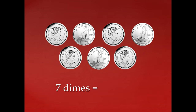So if we have seven dimes, let's count and see how many cents that would be: ten, twenty, thirty, forty, fifty, sixty, seventy. Did you notice that when we counted the dimes we counted them by ten? That's because dimes are worth ten cents.